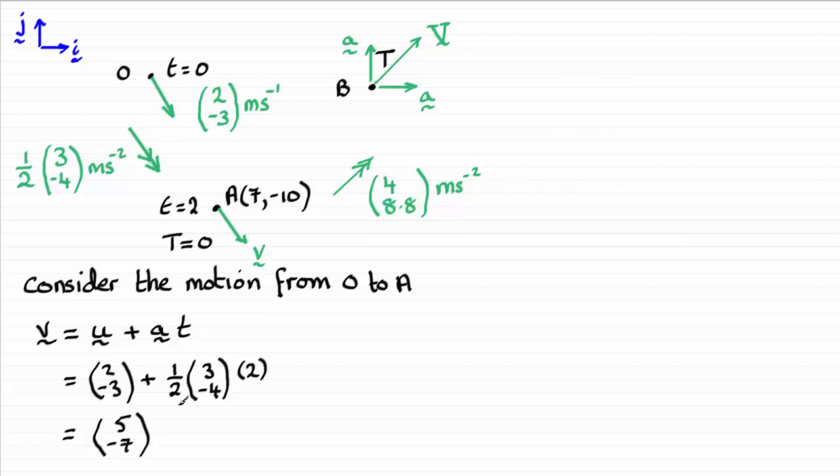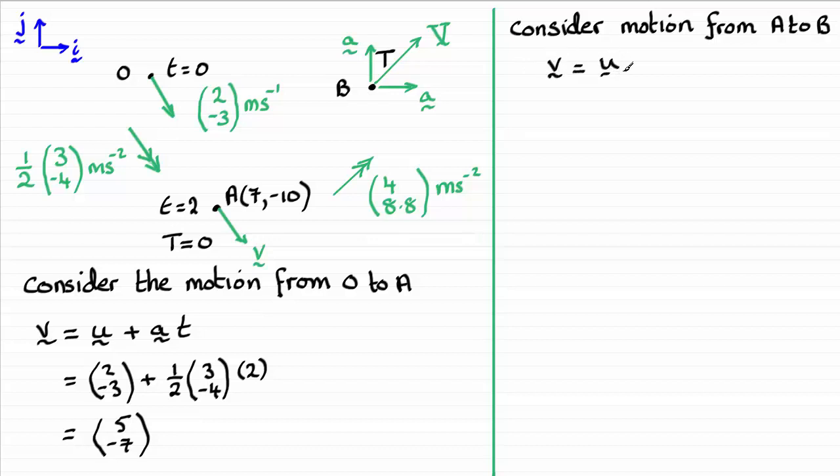So, that's our final velocity vector here. Now, all I need to do now is just consider the motion from A to B. So, let's just put that in. Considering the motion from A to B, what I'm going to use is V equals U plus A T again. So, let's just put that in, V equals U plus A T.